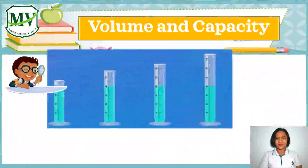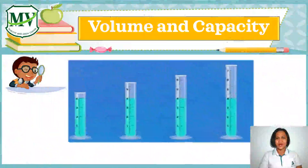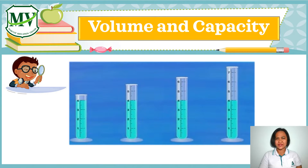The following cylinders have different capacities, but the amount of liquid inside all the cylinders are the same. This amount is called volume. Volume represents the amount of liquid, or how much space the liquid takes up in a container.